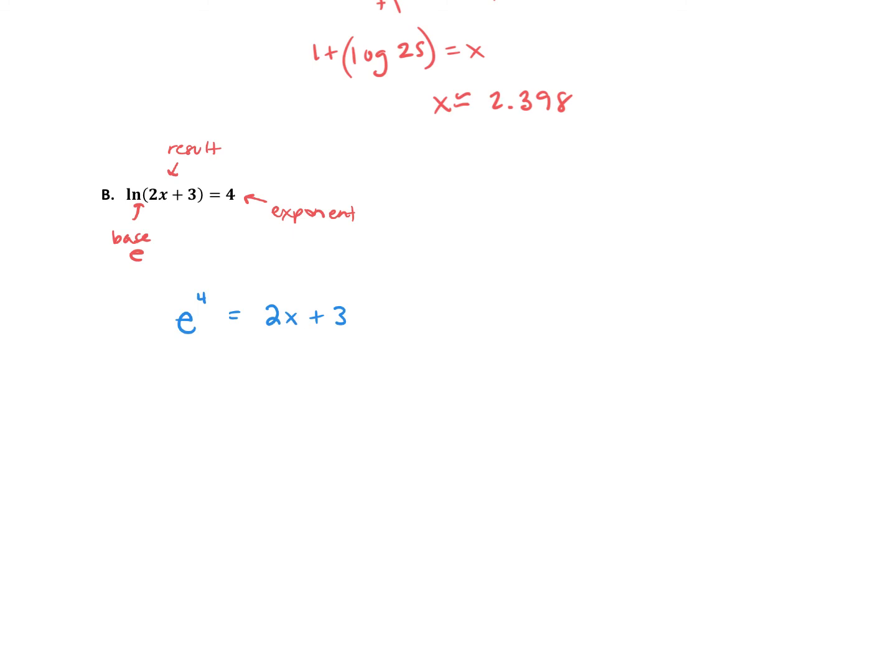Alright, well let's solve this. We're going to solve for x over on this side. How about if we subtract 3 from both sides? So we have e to the fourth minus 3 equals 2x. We'll divide both sides by 2, and if you notice over here, I had to divide the entire side by 2, so we have x alone. Now x is equal to e to the fourth minus 3, all divided by 2.